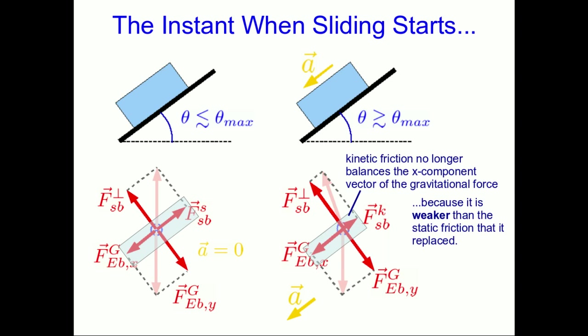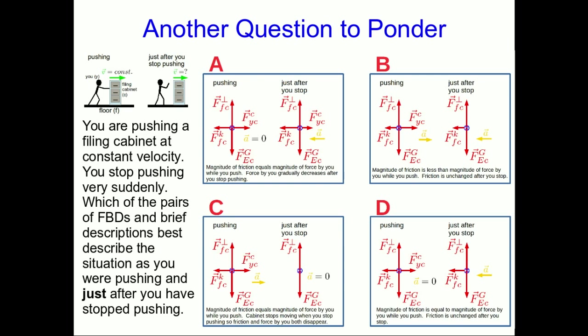But for now, I just want you to think about a much simpler situation with kinetic friction to make sure that you understand it. So here's another question to think about. Suppose you're pushing the filing cabinet now at constant velocity. You've got it moving, and you're pushing it across the floor at constant velocity, and you stop pushing very suddenly.